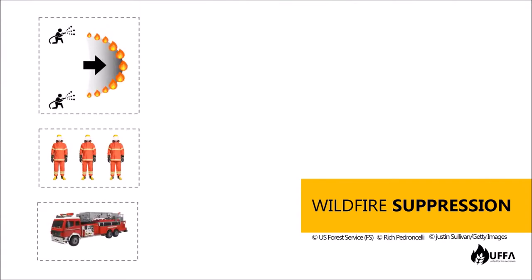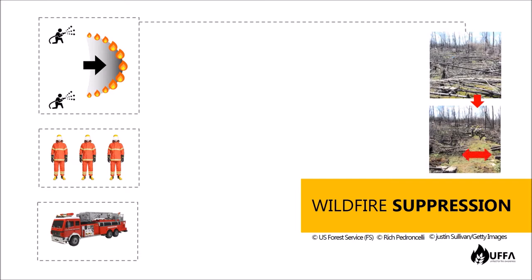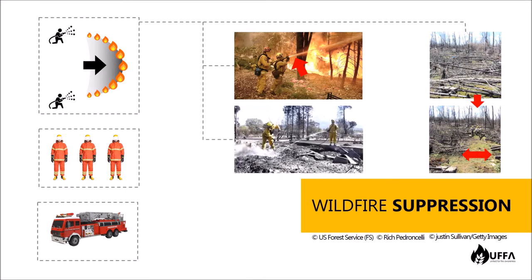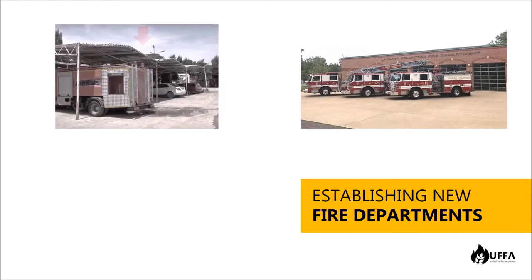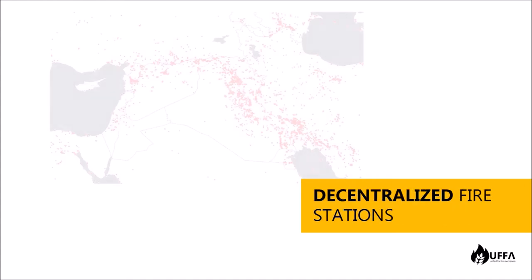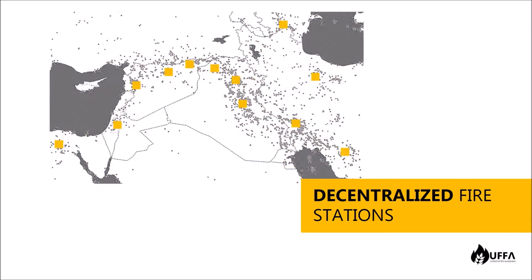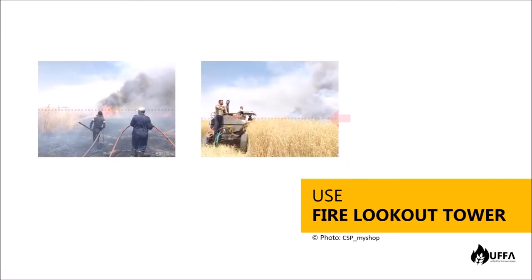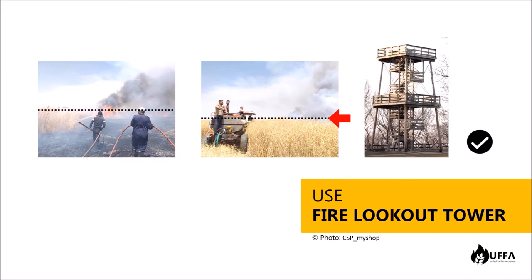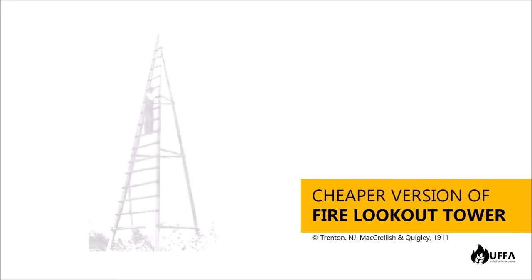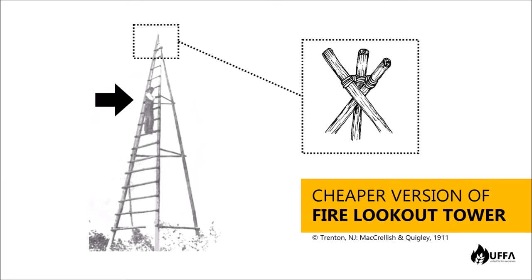Wildfire suppression requires trained crews, equipment, and many different techniques, such as rehabilitation, direct and indirect attack, and mop up. Fire stations play obviously the most effective role. Besides upgrading current departments, new ones should be established. Decentralized fire stations can reduce the distance to the fire area and should be located in the most affected areas. Use fire lookout towers to have better observation — even cheaper versions, such as simple tripods of wooden poles, are available.